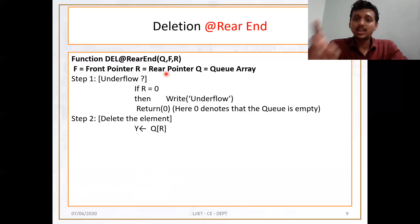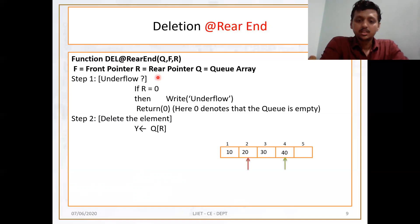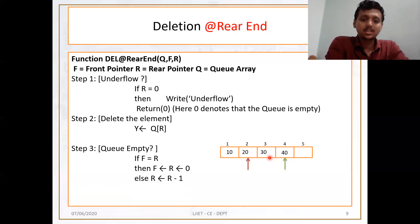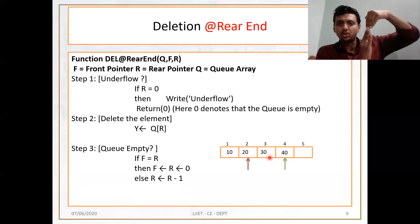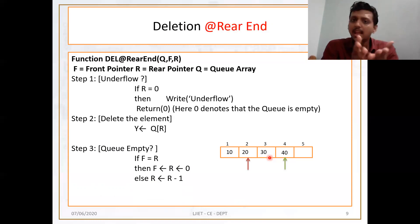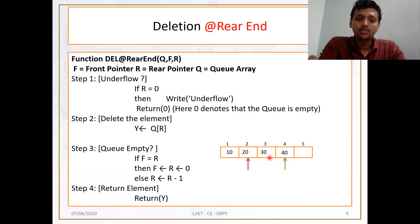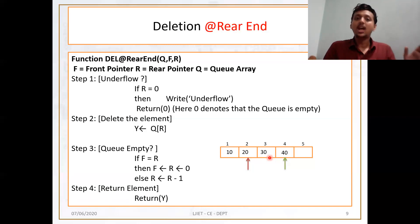Step two: assign Q[R] to Y. Then check — if front and rear both point to the same position after assigning the value, then set both to zero. Else, just decrement the rear pointer. Here, since we are using the rear pointer, it is a decrement of the rear pointer. The last step is return Y. See the difference between deletion at front end and deletion at rear end: here we decrement the rear end instead of incrementing the front.